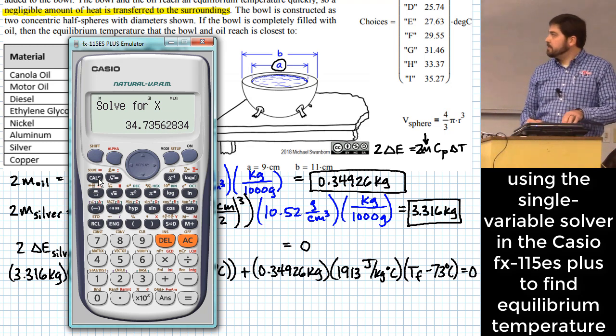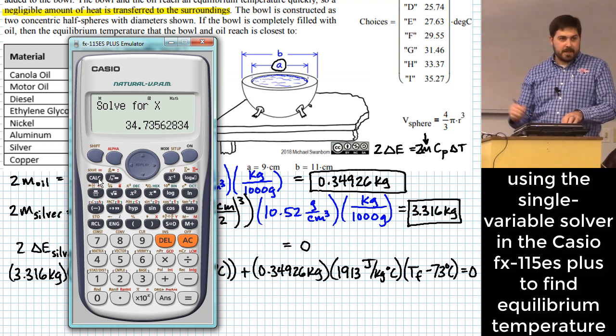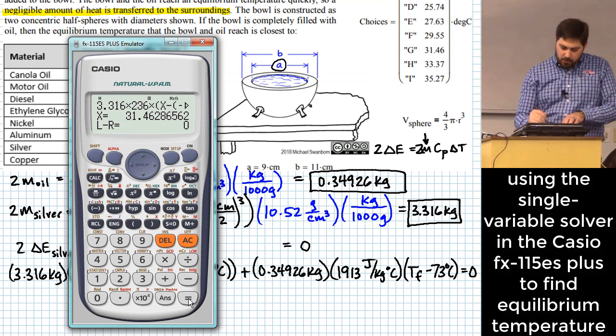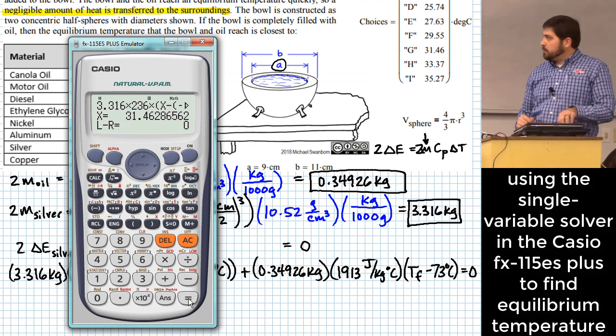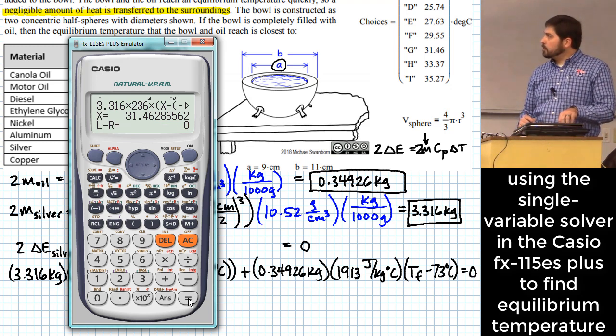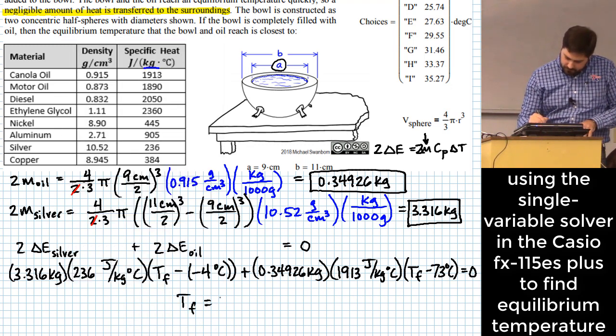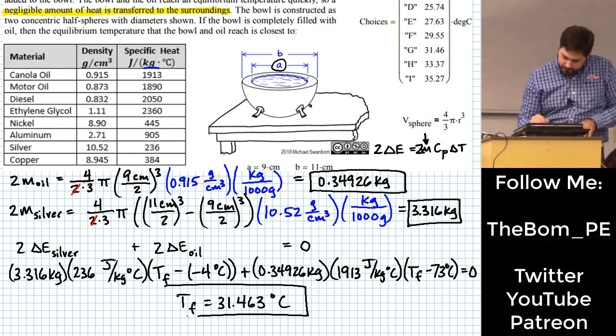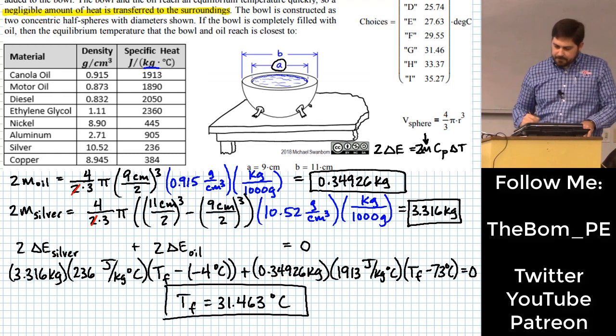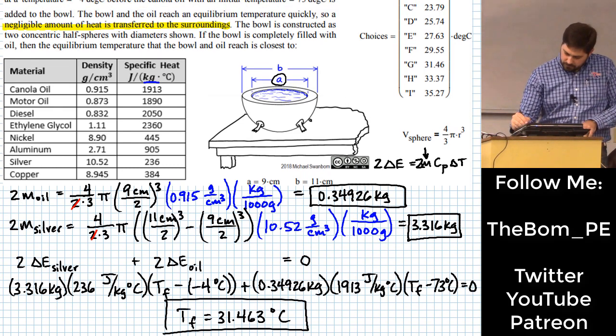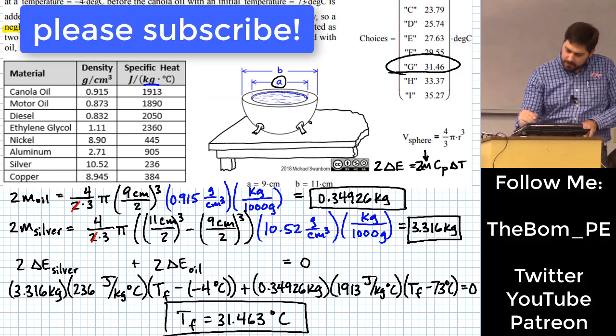Now it asks you, is this the variable you want to solve for? Yes, it is. And if it is, you just hit equals, and it gives you a number there, 31.463 degrees C. And so you would answer G.